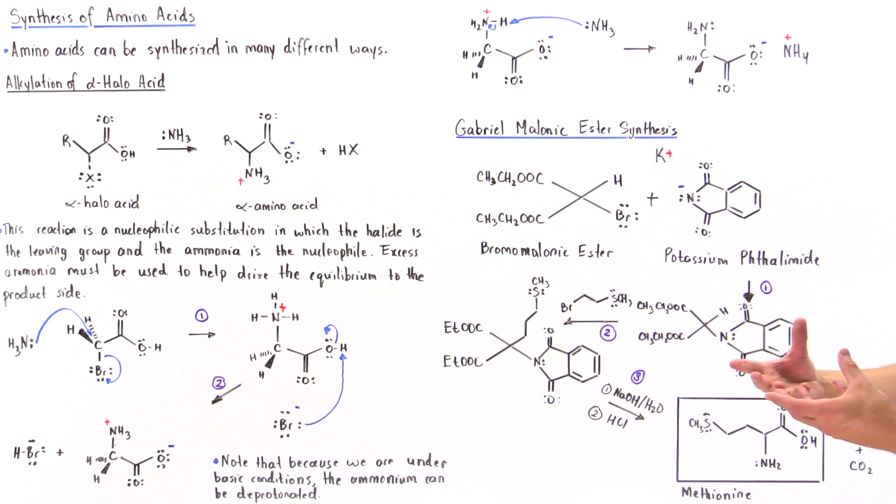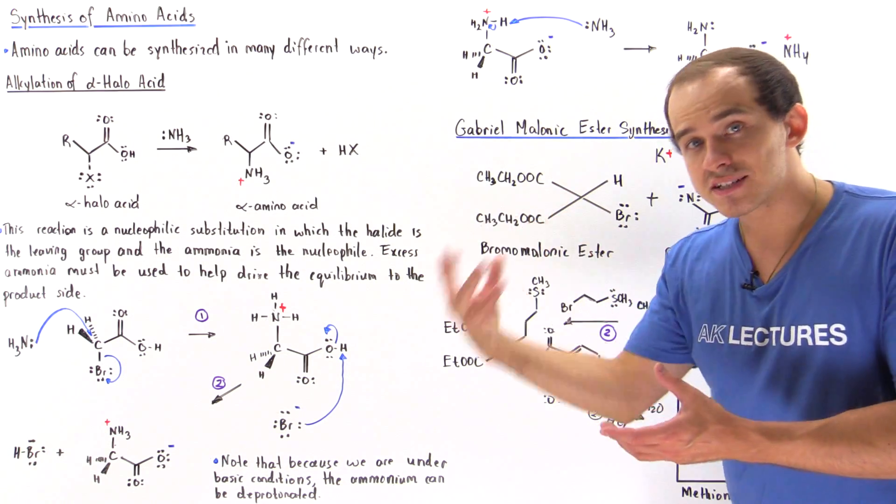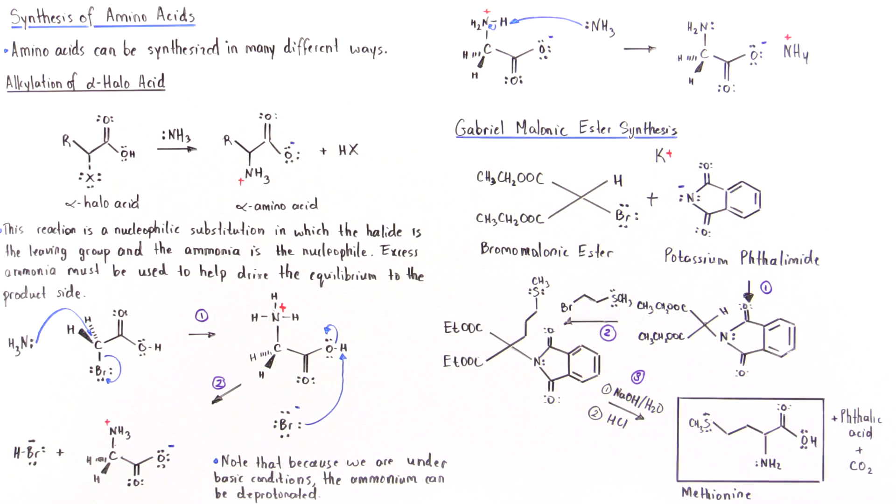We'll form the phthalic acid, carbon dioxide. So, basically, we're going to get a decarboxylation reaction and we're also going to form our amino acid. In this case, we're going to form our methionine.